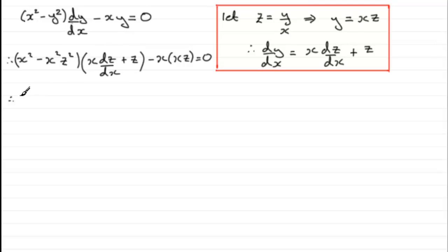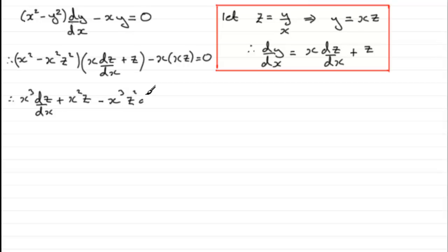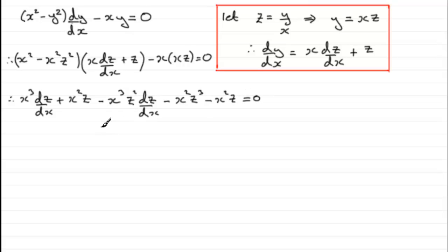Expanding the bracket: x² times x·dz/dx gives x³·dz/dx, and x² times z gives x²z. Then minus x²z² times x·dz/dx gives minus x³z²·dz/dx, and minus x²z² times z gives minus x²z³. Finally, the last term is minus x²z, and that all equals zero.